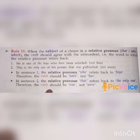Rule 11: When the subject of the clause is a relative pronoun — that, who, which — the verb should agree with the antecedent. Example: 'He is one of the boys who have been selected' — note 'have', not 'has.' 'This is the only one of his poems that was published' — not 'were.' In sentence one, 'who' refers back to 'boys', so the verb should be 'have'. In sentence two, 'that' refers to 'the only one', so the verb should be 'was.'